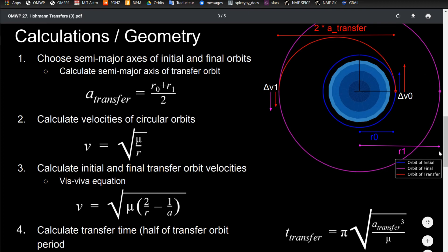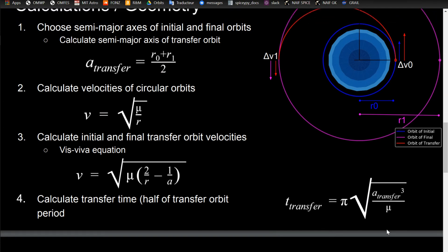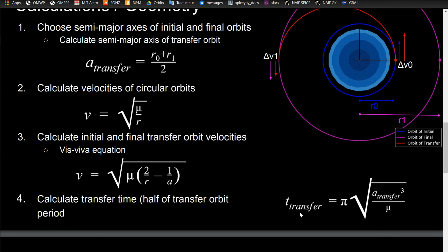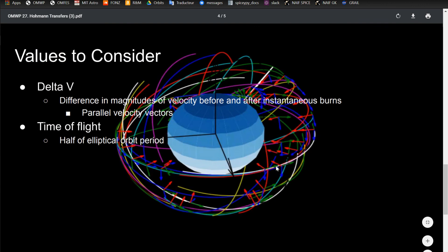You can see the transfer orbit here is only going exactly halfway through. If you take its whole period, it would go all the way back around. That's conveyed in this equation: t_transfer equals π times the square root of a_transfer cubed over μ. I'll put a link in the description deriving it. This is half of the period of the transfer - if you want the full period, it's 2π. But we're doing half here.